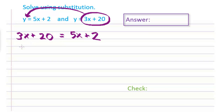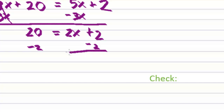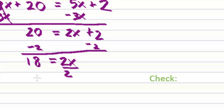When you have an equation with variables on both sides, it's a good idea to get all of your variables on the same side first. We can do that by subtracting 3x from both sides. The x's cancel, leaving 20 on the left side and 2x plus 2 on the right side. Then subtract 2 from both sides to get 18 equals 2x. Dividing both sides by 2 gives us x equals 9.